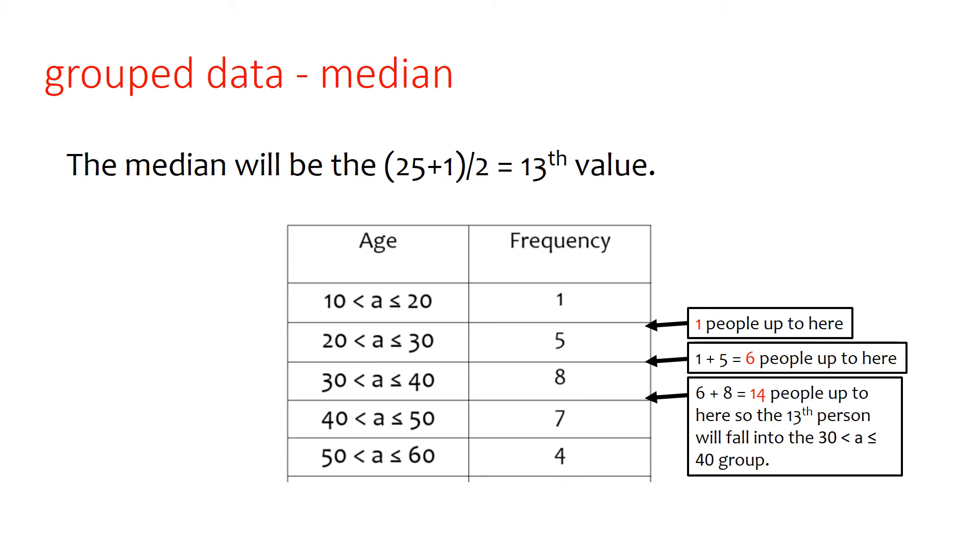And the median. We work this out in a similar way as before. We'll do a running total going down. We are looking for the 13th person this time, as we've got 25 people. So if we do our running total, we say from age 10 to 20, there's one person. From age 10 to 30, there's one plus five, which makes six people.